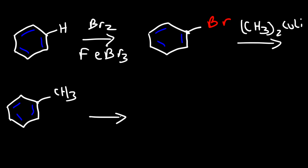And then in the next step we're going to use NBS, which is equivalent to using Br2 with UV light. What's going to happen is one of the benzylic hydrogens is going to be replaced with a bromine atom. And so what we now have is benzyl bromide.